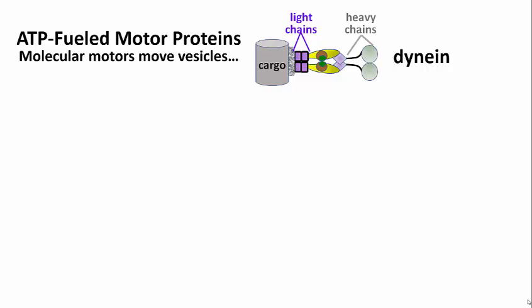Dynein functions in cilia and flagella of eukaryotic cells, and also functions as a molecular motor carrying vesicles in a neuron.